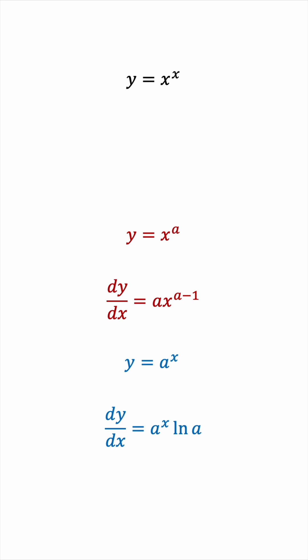So it's kind of intuitive to propose that the derivative of x to the x would be x times x to the power of x minus 1, assuming it follows the first case, and then plus x to the x times the natural log of x, assuming it follows the second case.